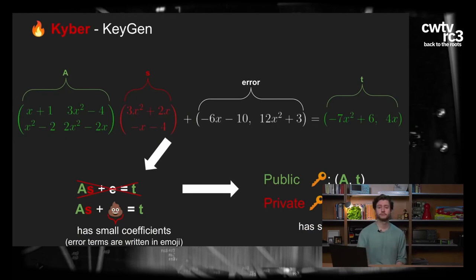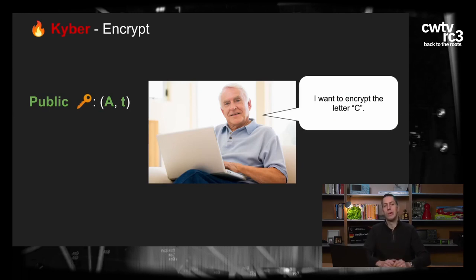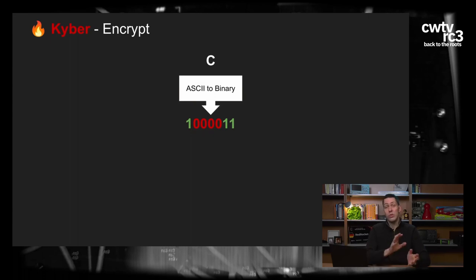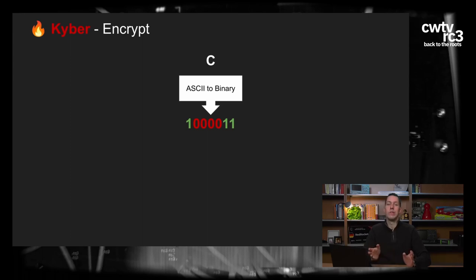Wie können wir mit so einem Schlüsselpaar verschlüsseln und entschlüsseln? Stell dir vor, du hast Kyber und möchtest den Buchstaben C verschlüsseln. Um etwas zu verschlüsseln, brauchen wir den öffentlichen Schlüssel – die Matrix A und den Vektor T. Als erstes müssen wir C in etwas umwandeln, was mit Kyber interagieren kann. Zuerst in Binär umwandeln – wir benutzen einfach ASCII-Encoding. C wird in eine Serie von Einsen und Nullen umgewandelt, zum Beispiel 1,0,0,0,0,0,1,1. Jetzt haben wir die binäre Darstellung.